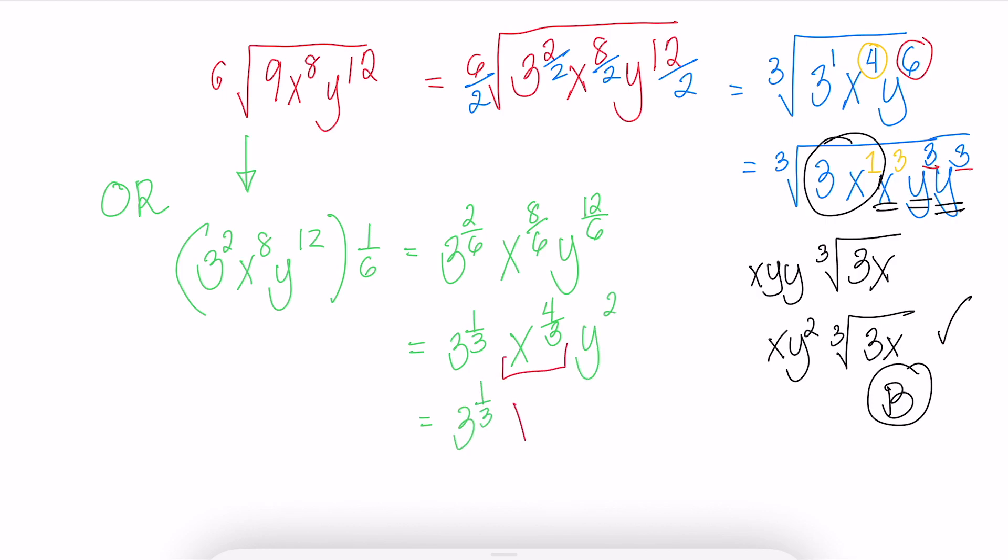Now, let's take out all the 1 thirds. That means they will be the ones inside the cube root. We have x to the 1 third, and x to the 1, and y squared.